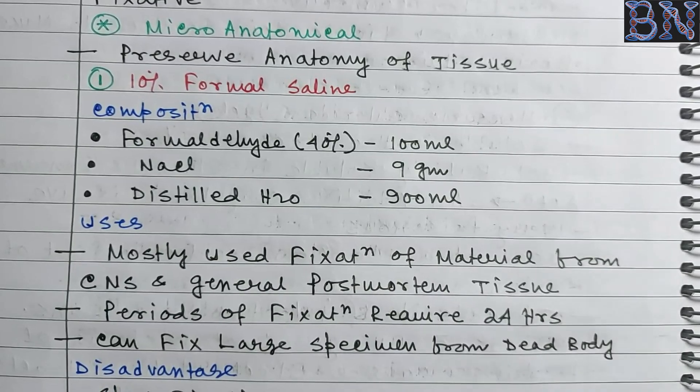Clark's fluid is used for cell culture and chromosomal analysis. It provides rapid and good nuclear fixation and is also good for preservation of cytoplasmic content. Composition: absolute alcohol 75 ml and glacial acetic acid 25 ml. Clark's fluid is very important — it is specifically used for cell culture.